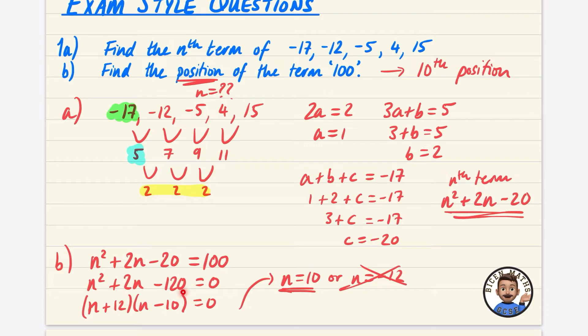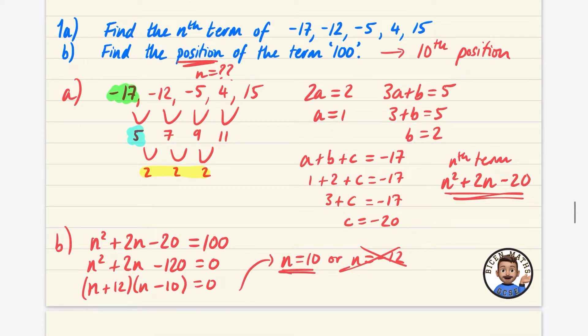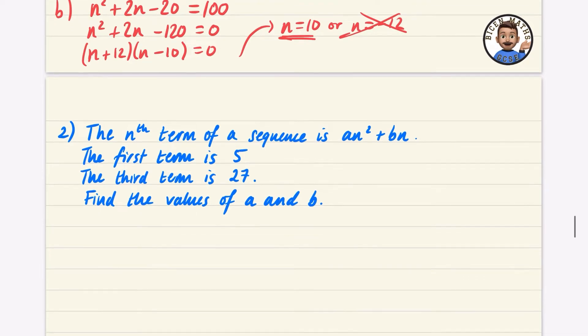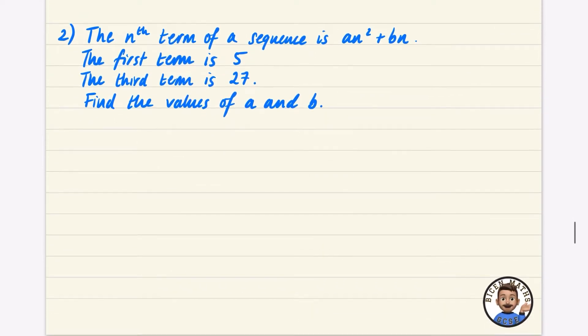That's why we've got this one here. I did not do very well at factorizing that, but you could take a bit more time than I did. And now the last one that we've got here is to do with a quadratic sequence. It says the nth term of a sequence is an squared plus bn. The first term is 5, the third term is 27. Find the values of a and b.